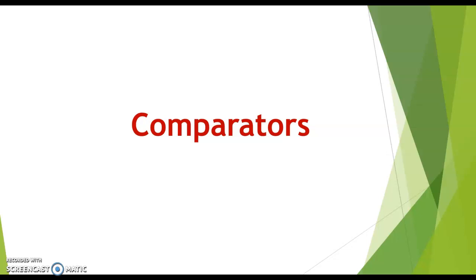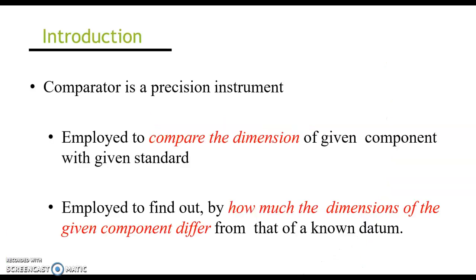This video explains the classification of comparators and their working. A comparator by definition is a precision instrument. These instruments are actually not measuring dimensions but compare the dimensions of a given component with a given standard, and are employed to find out how much the dimensions of the given component differ from a common datum.